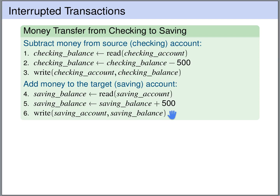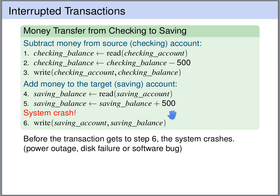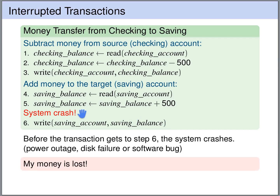However, what if the system crashes just before the new balance with 500 euros more is updated on the savings account? The balance is reduced on the checkings account, but just before the savings account is updated, the system crashes. So we have lost 500 euros, because the money has been decreased from the checking account but it has not been increased on the savings account. This illustrates that we want transactions to be atomic actions on the database — either succeeding fully or not at all.